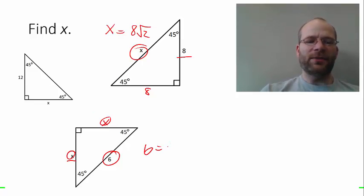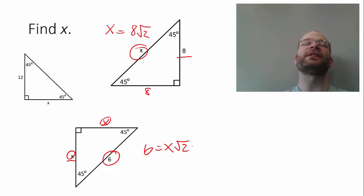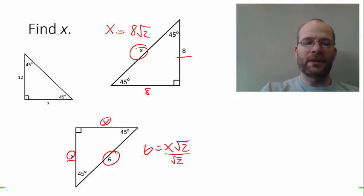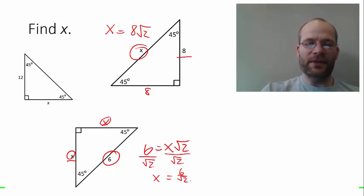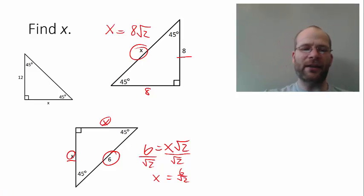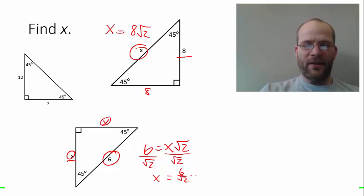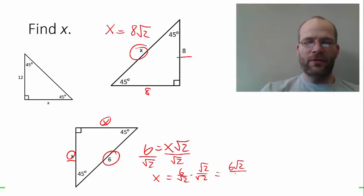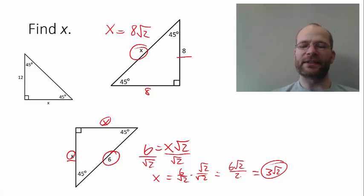We need a little additional algebra to solve for x, so we divide both sides by the square root of 2. We get x equals 6 over the square root of 2. That's correct mathematically, but we want simplest radical form, so we multiply by square root of 2 over square root of 2. We end up with 6 square root of 2 over 2, which equals 3 square root of 2. That's our final answer.